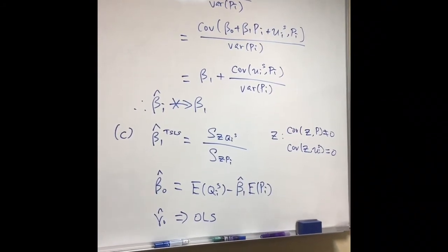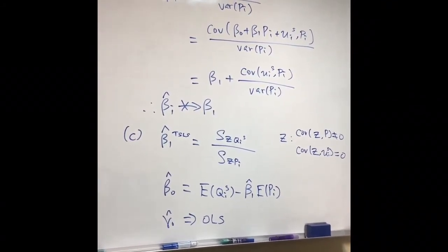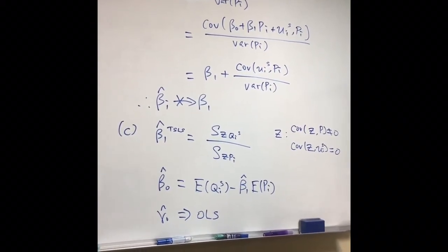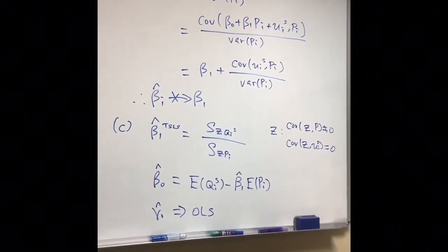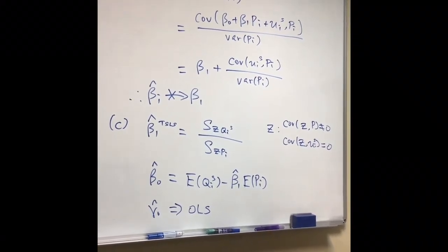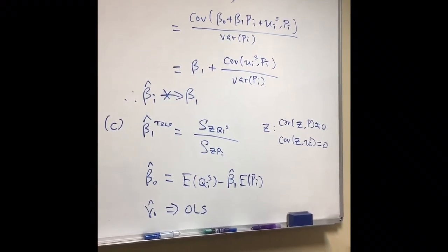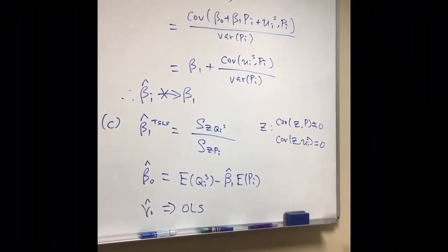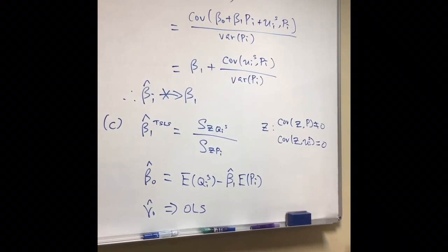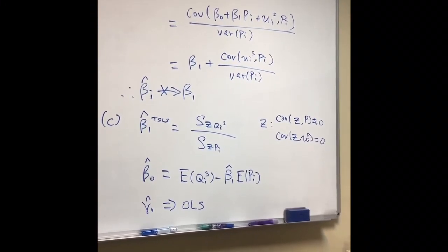Finally, part C asks you how to estimate beta_1, beta_0, and gamma_0. Beta_0 and gamma_0 are not easy to find because these involve the expected value of y minus beta_1_hat times the expected value of x. Finding beta_1_hat here suffers from some problems.